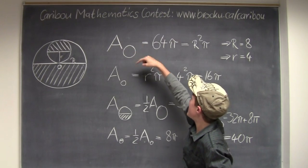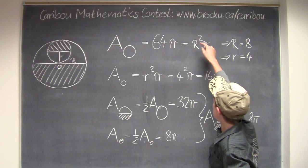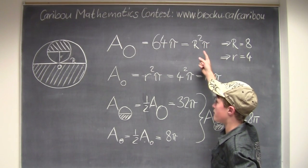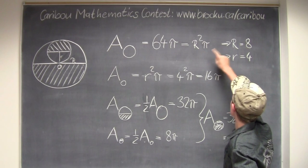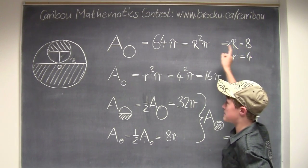The area of the big circle is 64 times pi, and it equals the radius squared times pi, which is the formula of the area of a circle. So the radius would be 8, because 8 times 8 is 64.